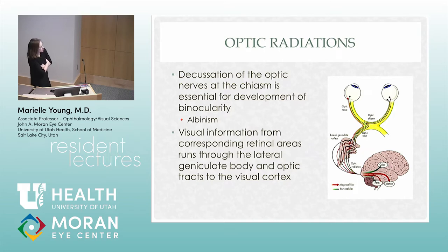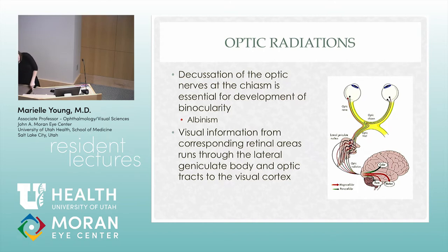So much of your brain has vision radiations running through it. Any kid I see who has a neurologic problem is much more likely to have strabismus. Your eyes are at the front of your brain and everything is interpreted at the back. The visual radiations can tell us about strokes and insults to the brain.